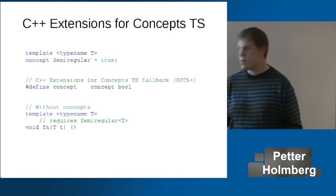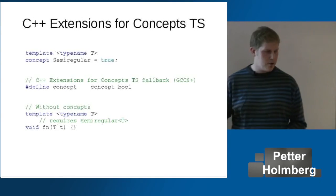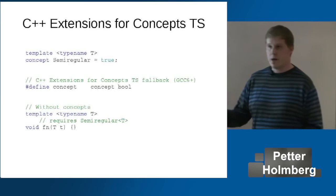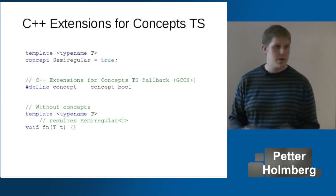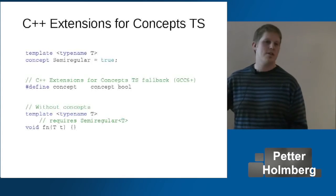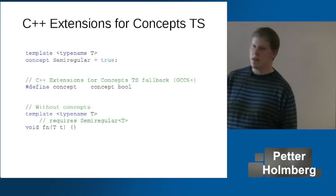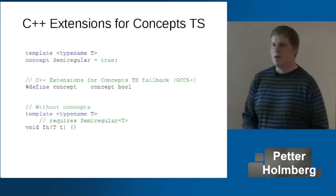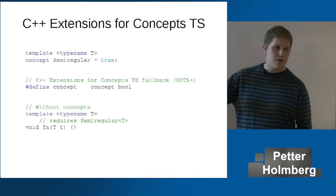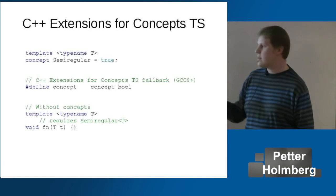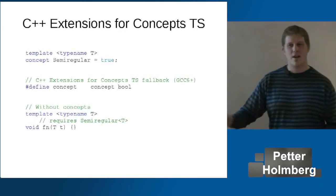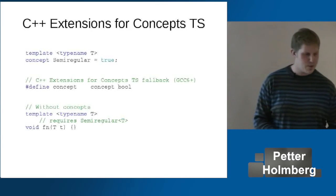Before we go into the definition of semi-regular, just a note on the difference between the technical specification you can use today and the upcoming standard: the syntax has changed a little bit. It used to be `concept bool semi_regular`, but this `bool` has been removed since it always has to be a bool. A suggestion if you want to experiment with concepts: get used to the new syntax and use that. You can put a macro somewhere to redefine `concept` as `concept bool`, and then you only have one line of code to remove later when you get a C++20 compiler.